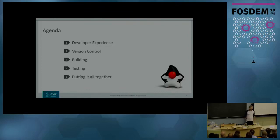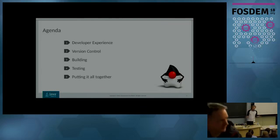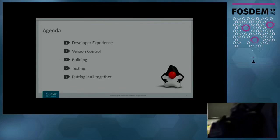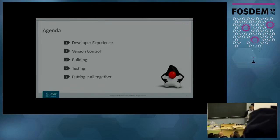We are going to stand here very still, and then together we are going to talk about what is the development experience and what does it mean. We are going to look at three different categories of tools related to the development experience: version control, testing, and then how you can put it all together into one program workflow that you can apply in day-to-day work on the OpenJDK.